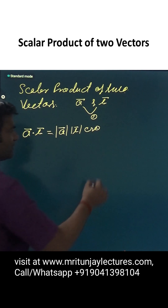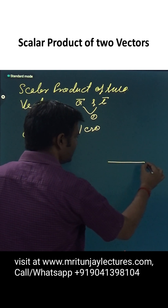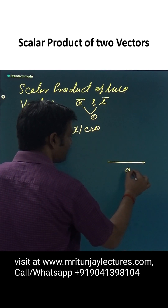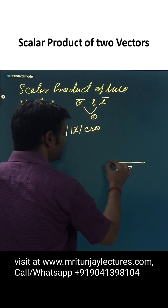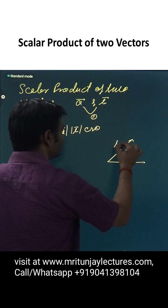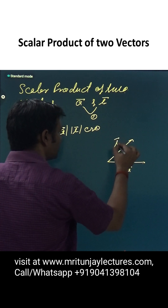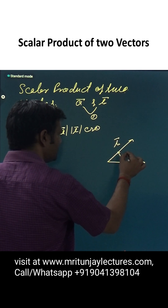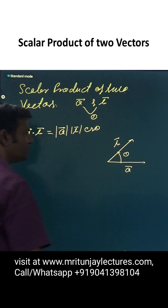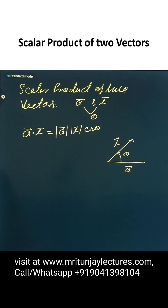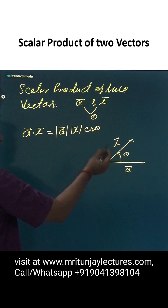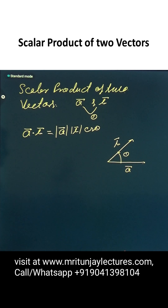Means, if this one is a and that one is b, the angle between a and b is theta. So, a dot b is written as magnitude of a, magnitude of b, and cosine of the angle theta between these two.